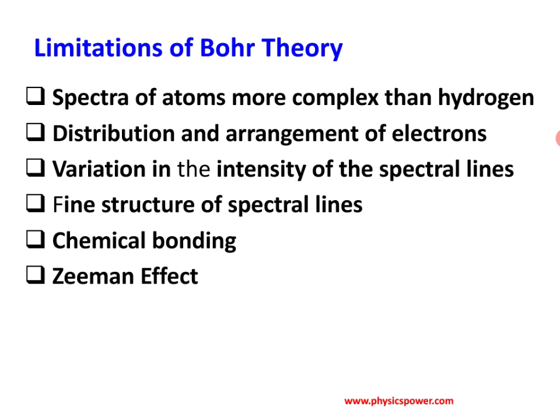At the time of Bohr, Zeeman studied spectral lines and found that when light is passed through a magnetic field, one spectral line splits into many lines — this is the Zeeman effect. Bohr was unable to explain why the photon energy splits in a magnetic field. Similarly, Stark studied spectral lines in an electric field and found that spectral lines split in the presence of an electric field — this is the Stark effect. Bohr's theory was unable to explain this either.